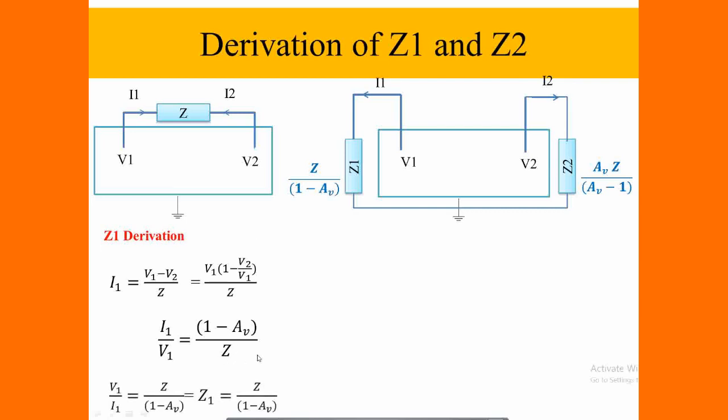And flip this one so that we are going to be having V1 by I1 is equal to Z by 1 minus AV, itself equal to Z1 equal to Z by 1 minus AV. This we can observe from figure 2 as V1 by I1, which is nothing but Z1.